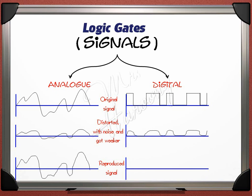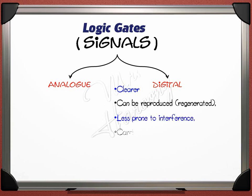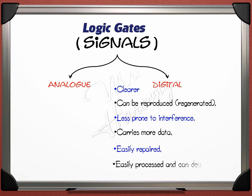If we amplify and reproduce a digital signal after transmission, it looks like the original with no distortion. This gives digital signals advantages over analog: they are clearer, can be reproduced or regenerated, are less prone to interference, carry more data, are easily repaired, easily processed, and can be handled by computers. These are the key differences between analog and digital signals.